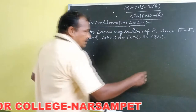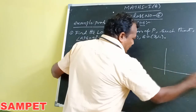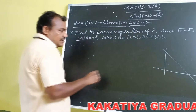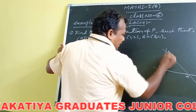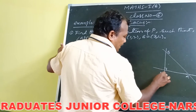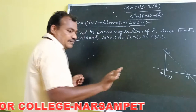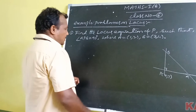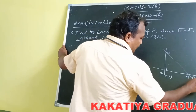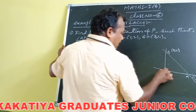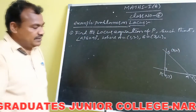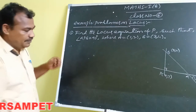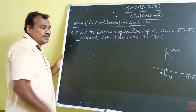Now students, here this is the locus condition, given by angle APB is equal to 90 degrees. That means the given two points A and B are subtending a right angle at point P with coordinates (x, y). Here is a diagram showing a right angle triangle at point P. Given that A is equal to (1, 2) and B is equal to (3, 4), we have to find out the locus equation of P.